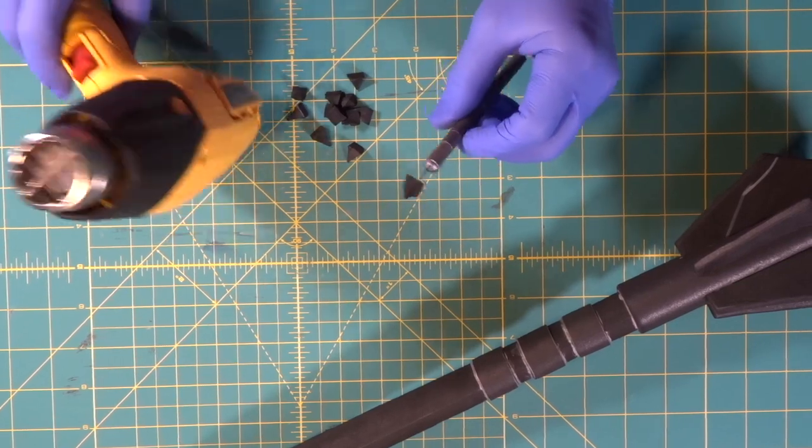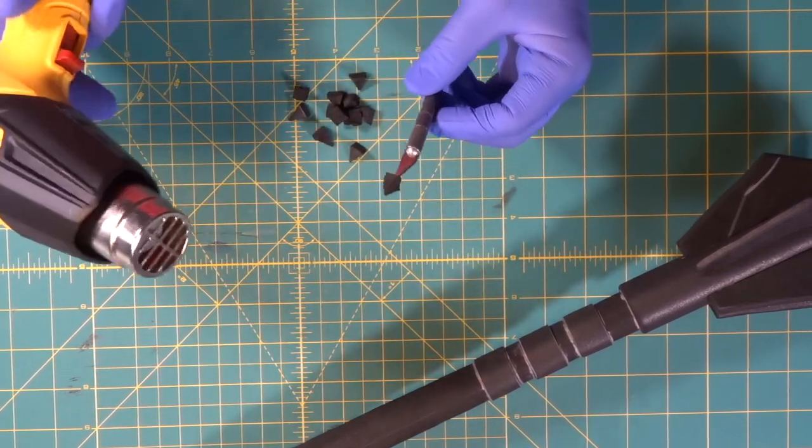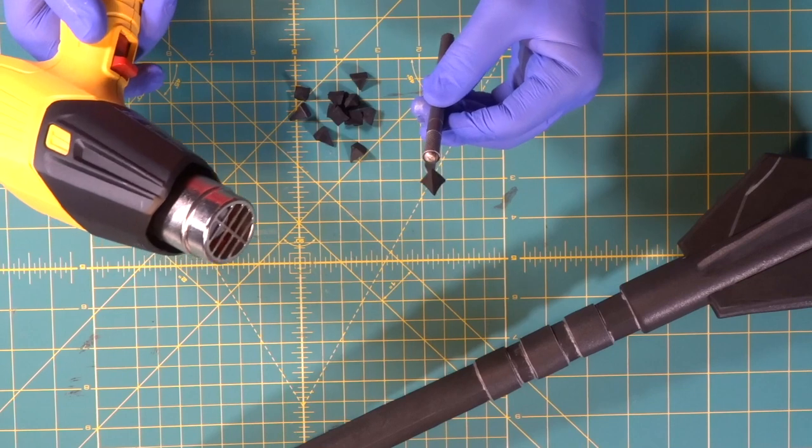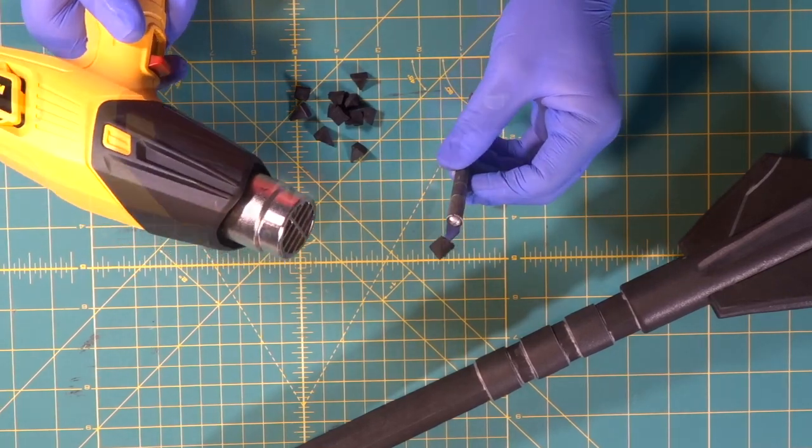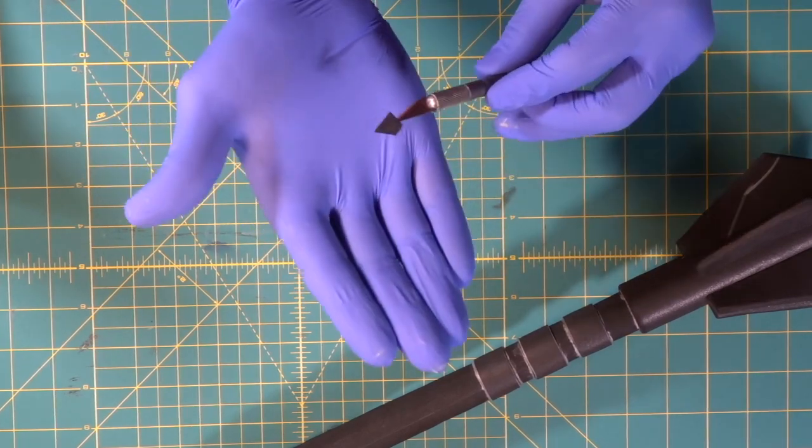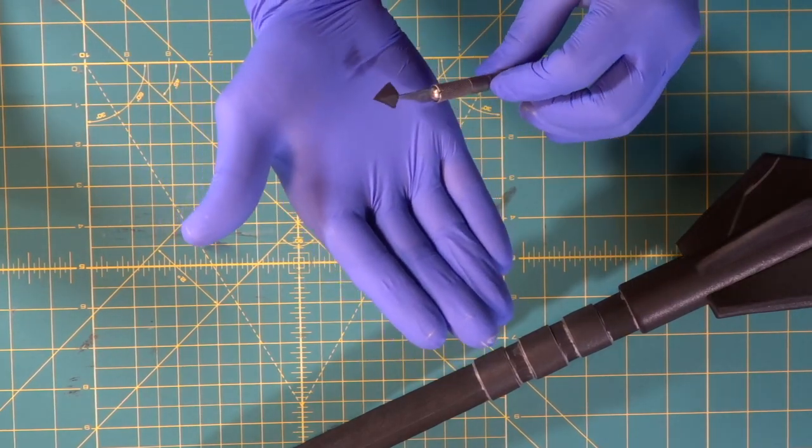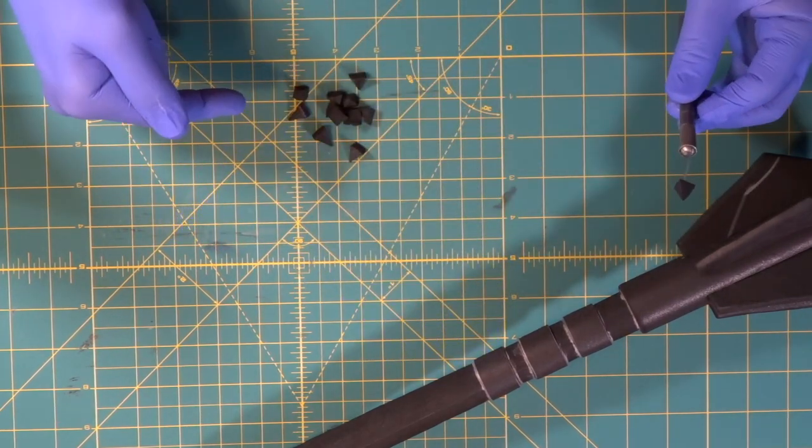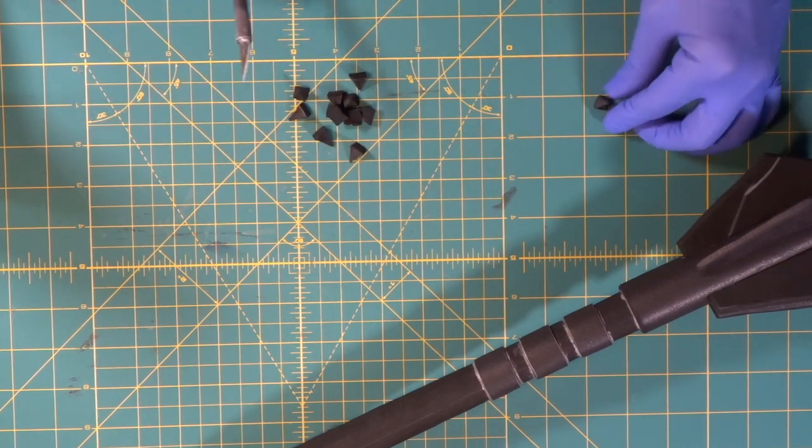Okay, now we're going to heat seal all 12 of our spikes. Now remember, we didn't sand them because we wanted them to look a little bit rough. That's it, look at that. Nice, shiny, tight foam. Now we're just going to do that for the rest of the 11 and then we can stick them.